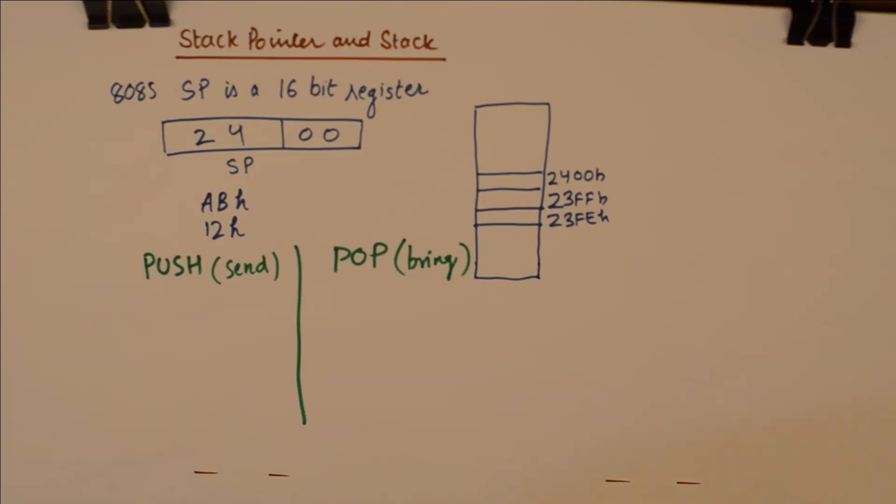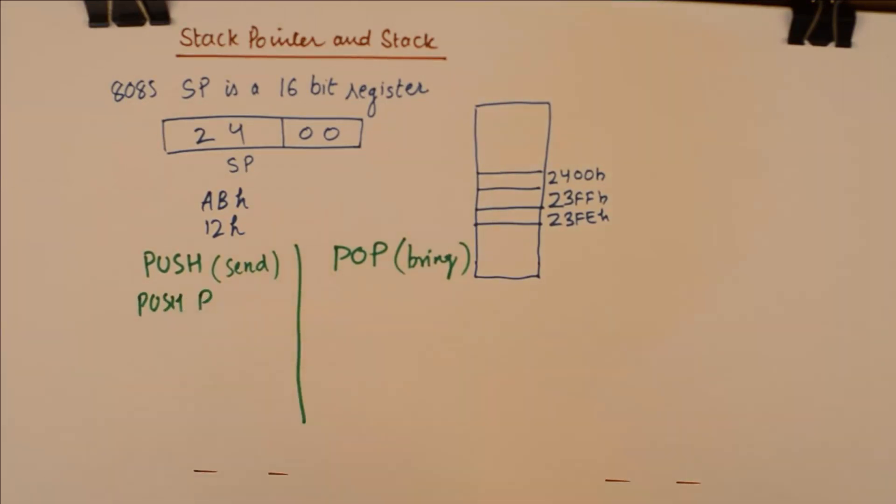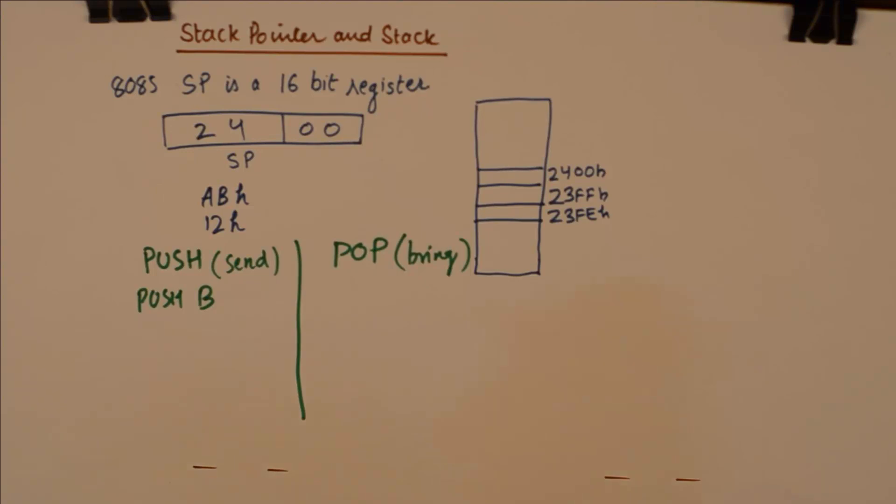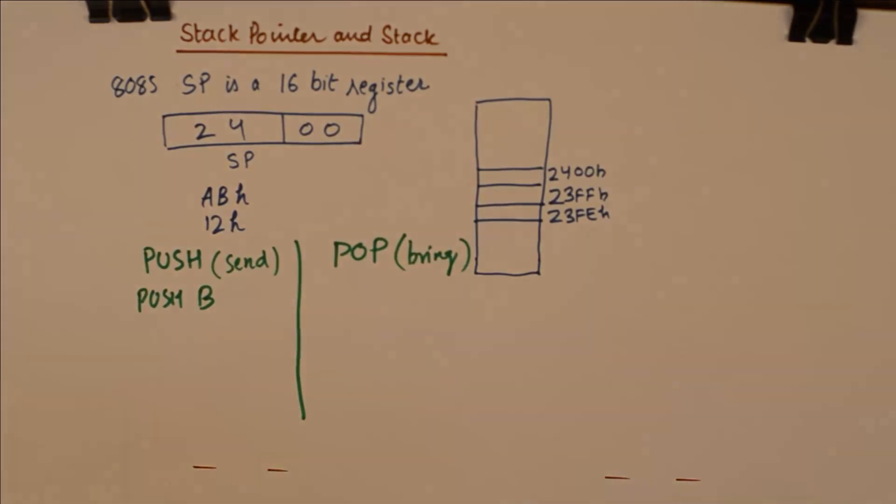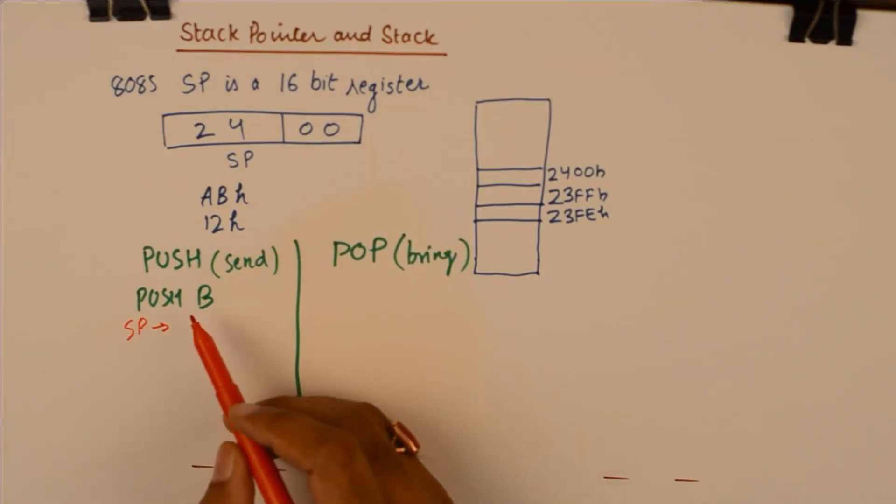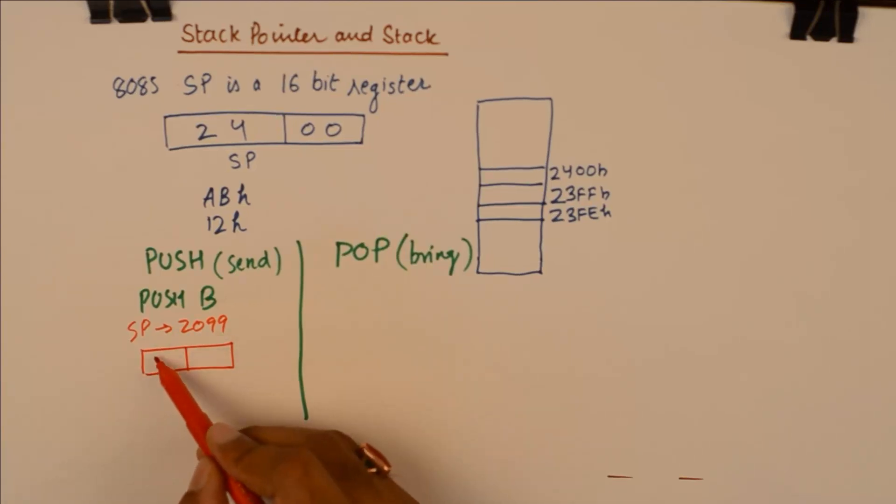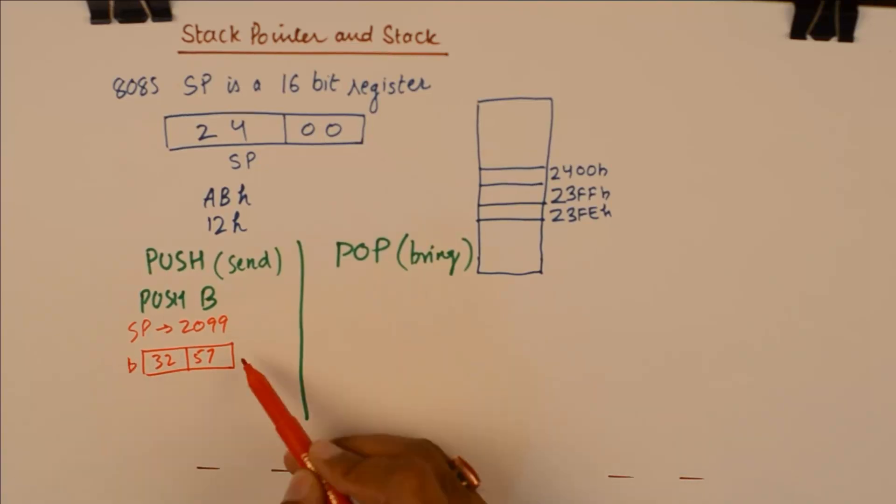Now there are some rules to these instructions. For example when we wish to use push we will need to push a register pair. And for example we can use the instruction push B which will eventually send the contents of the BC register pair to the stack. And let us say my current location of stack is, my stack pointer is pointing to 2099. And my BC register has a value.